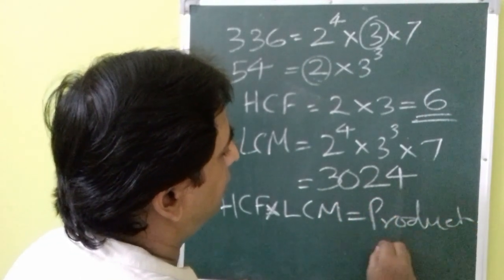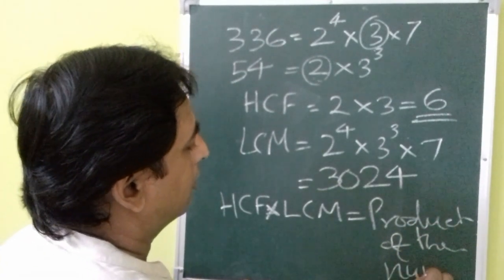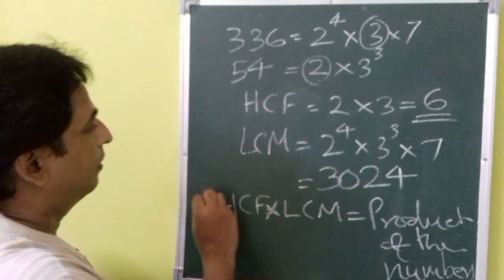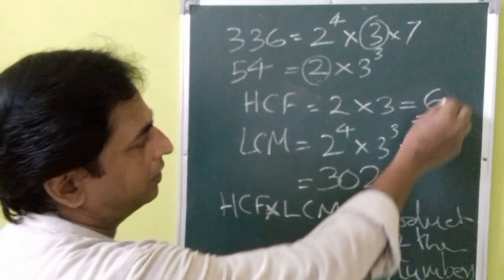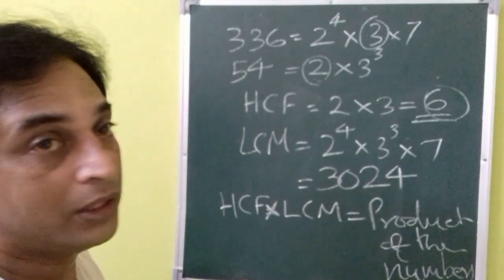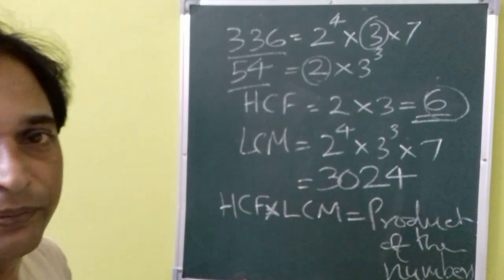You can multiply HCF into LCM that is 6 multiplied by 3024 and see whether it is equal to 336 multiplied by 54.